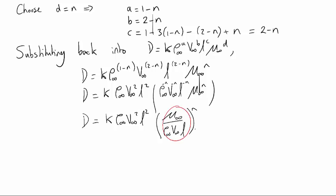Because Reynolds number, the definition of Reynolds number is rho V times the length scale divided by mu. We're not quite there because of course what we were asked to show in the question was that the drag coefficient is a function of Reynolds number alone.